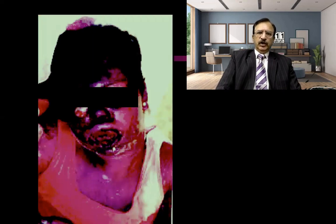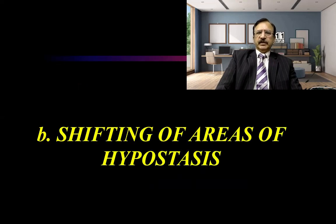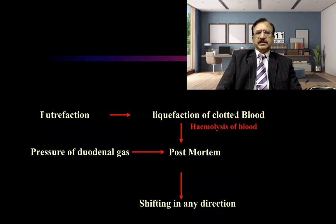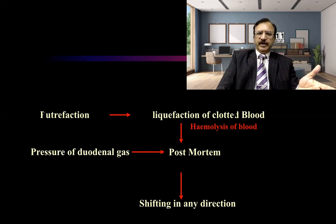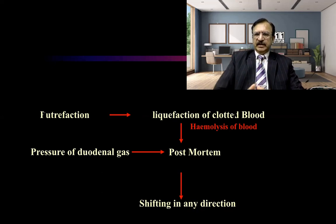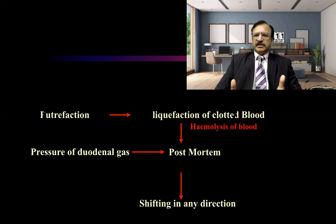This is how the swollen face looks — protrusion of the tongue and lips being swollen. Then, shifting of hypostasis occurs because of the pressure effect of gases. As putrefaction leads to liquefaction of the collected blood, hemolysis, and pressure from the putrescent gases, it is post-mortem and the shifting can occur in any direction. When the gases are abundant from the hollow viscera, they exert pressure within the cavities and then outward, causing the hypostasis to shift.